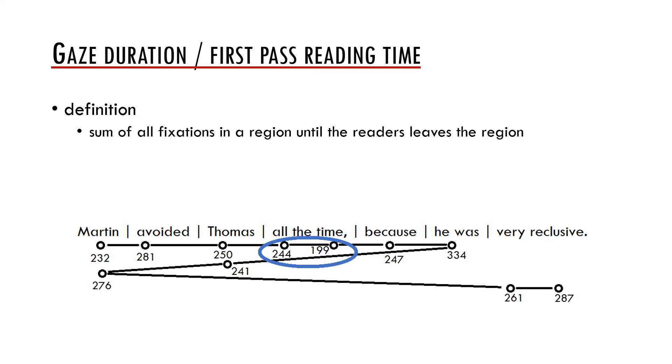Another measure is called gaze duration or first pass reading time. The first term is used more often in case we focus on words, the second in case we focus on longer regions. It is defined as a sum of all fixations in a region until the reader leaves the region either to the right or to the left. In the example below, first pass reading time of the region all the time would be 443 milliseconds, which is a sum of 244 and 199 milliseconds.